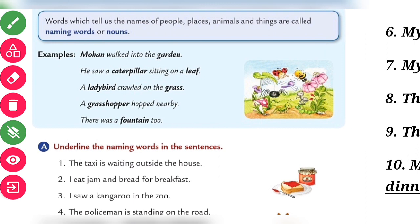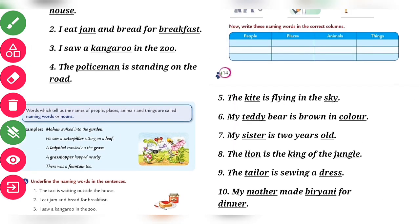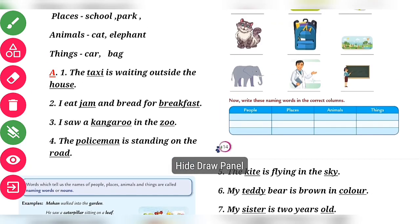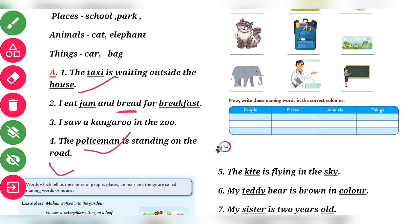The next exercise is about underlining the naming words in each sentence. Number one: the taxi is waiting outside the house — naming words are taxi and house. Number two: I eat jam and bread for breakfast — jam, bread, and breakfast. Number three: I saw a kangaroo in the zoo — kangaroo and zoo. Number four: the policeman is standing on the road — policeman and road. Number five: the kite is flying in the sky — kite and sky. Number six: the teddy bear is brown in color — teddy bear and color.